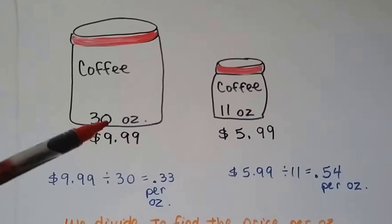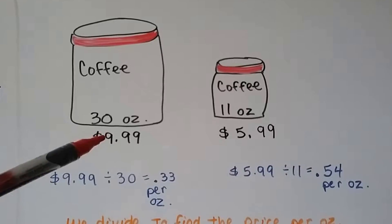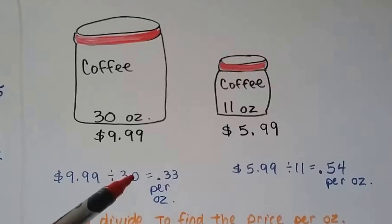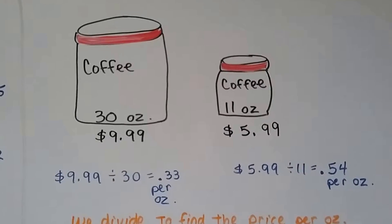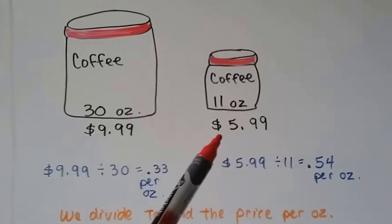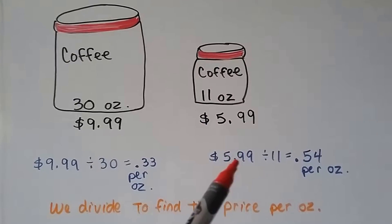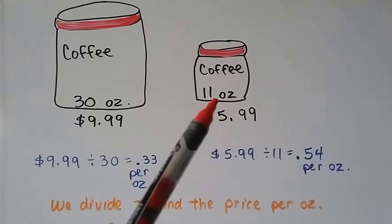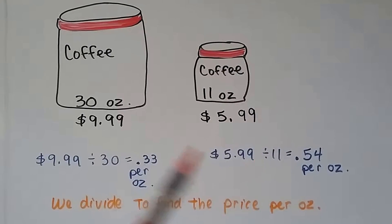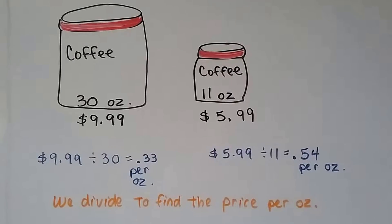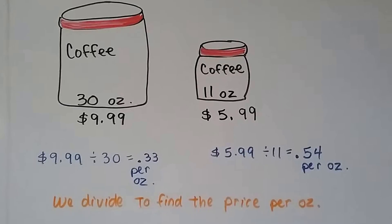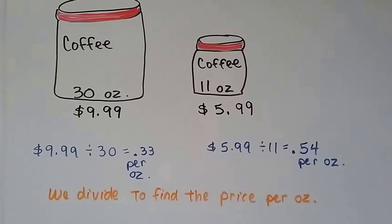What we do is, we take the amount, the $9.99, and we divide it by the ounces, the total ounces, the 30. That's going to give us a price per ounce of $0.33. When we do the same thing for the smaller can, we do the $5.99, divided by the 11 ounces, it's $0.54 per ounce. That's not a good deal. It looks like if you buy the bigger can, you're going to be saving $0.21 per ounce. That's almost like getting a half a can for free.